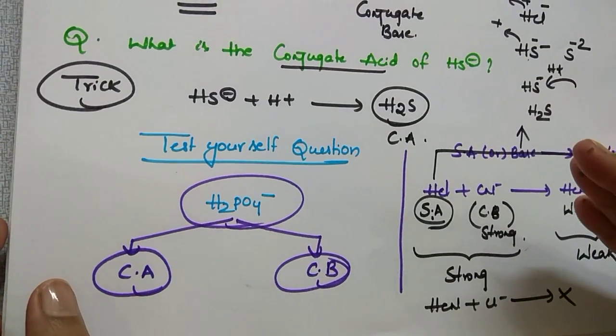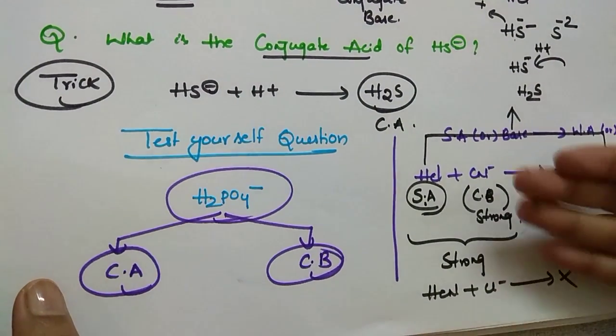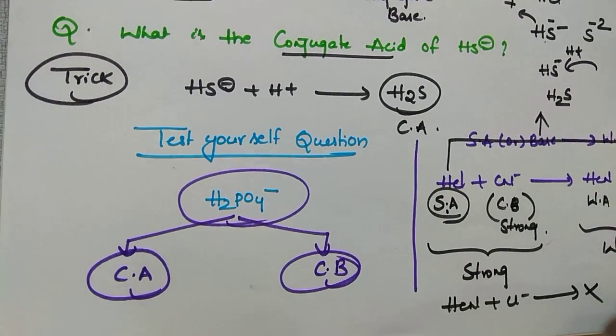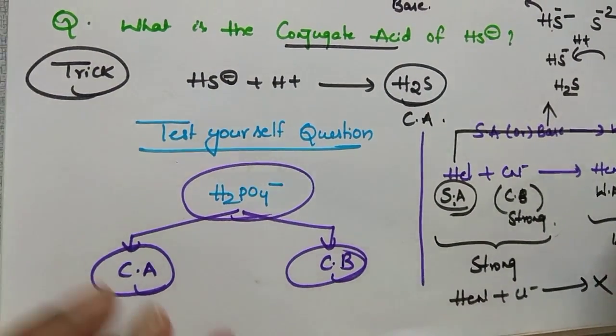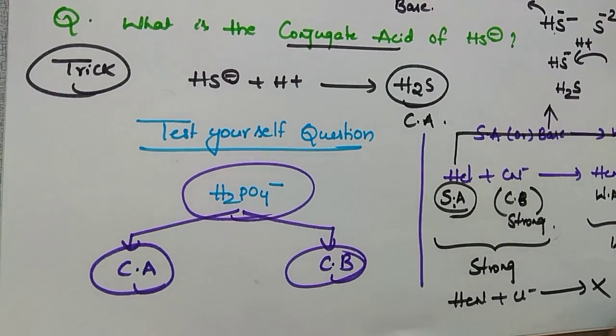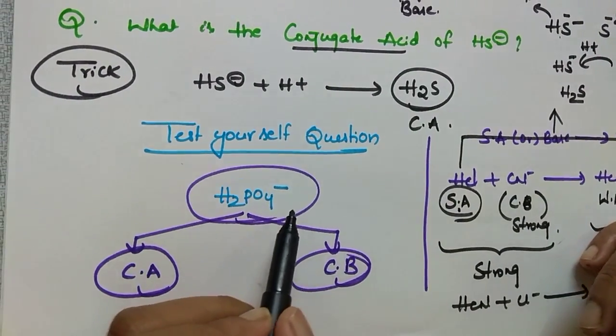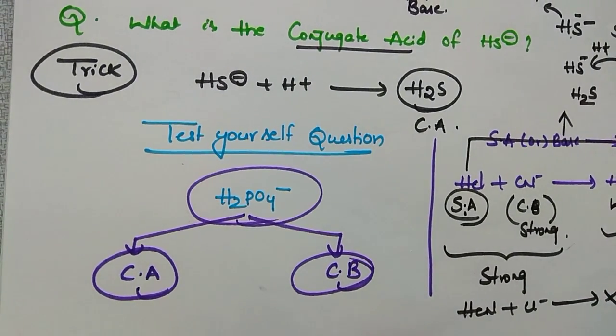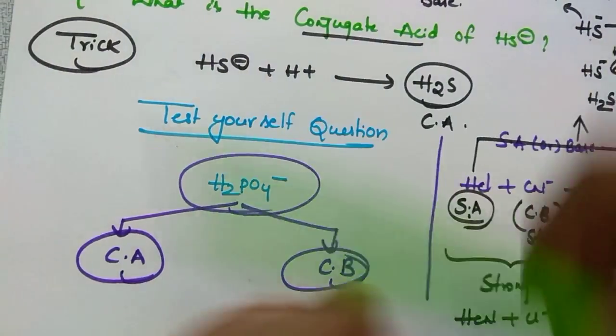Hi students, in this session I am going to give you the answer to the test yourself question I asked in the previous video. That is the trick to find conjugate acid and bases. See, this is the question: H₂PO₄⁻. To this you have to find conjugate acid as well as conjugate base.